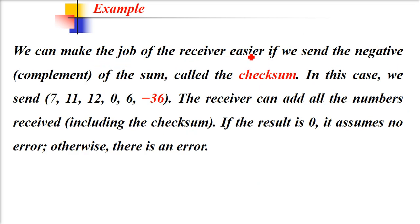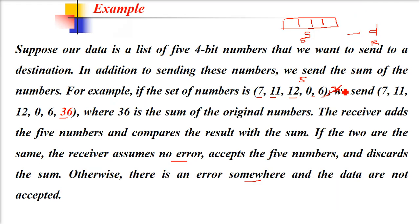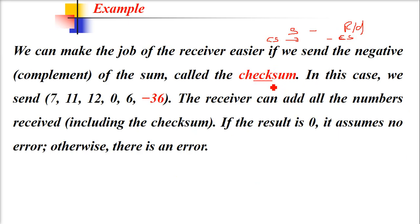We can make the job of the receiver easier if we send the negative, that is the complement of the sum, called the checksum. In this case, we send 7, 11, 12, 0, 6, -36. In digital, the negative is the complement, the one's complement. This is called the checksum. Checksum is not the sum—when we complement it and send it, it becomes the checksum.